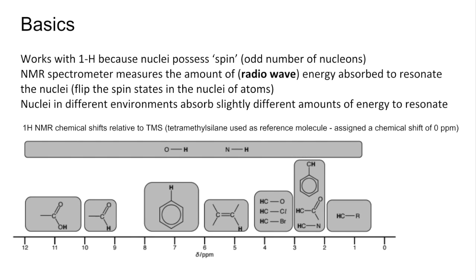So in the exam we've got this on the datasheet, and these are the chemical shift values for the groups that we would be tested on. You can see there it says the chemical shift values are relative to TMS, tetramethylsilane, and that's used as a reference molecule and assigned a chemical shift value of 0 ppm.